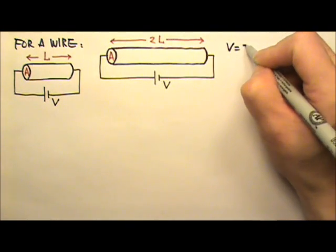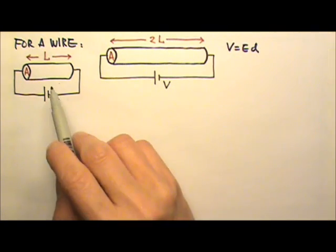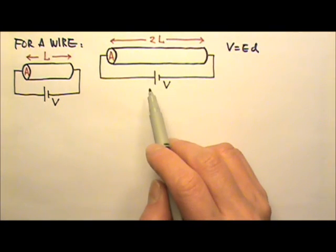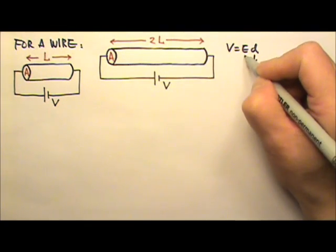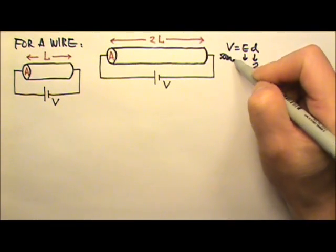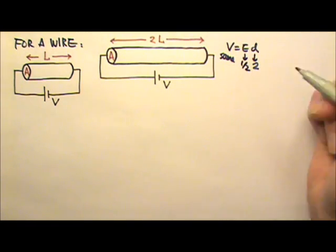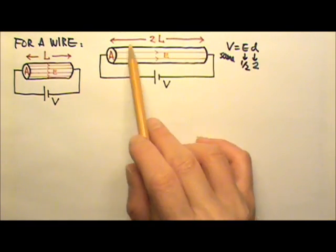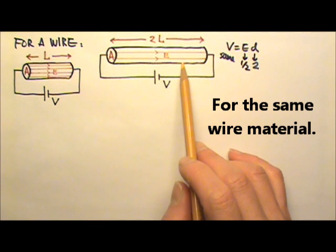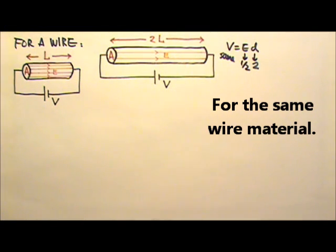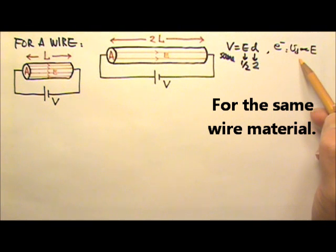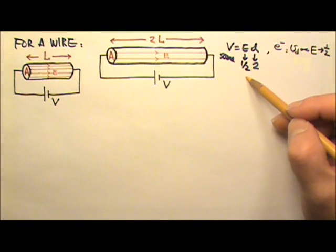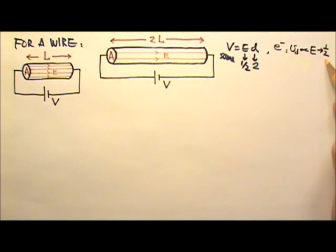Since V equals ED, there's the same voltage, but this one is twice as long. That means D is twice as much. That means for the same voltage, the electric field is half as strong. A weaker electric field means the electrons will have a slower drift velocity, and it turns out that the free electron's drift velocity is proportional to the strength of the electric field. So half the electric field means half the drift velocity.